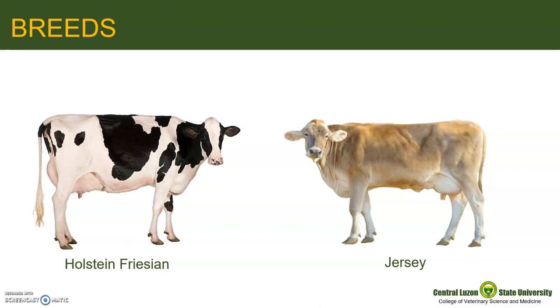Breed points are specific details of the breed's distinct standards such as color, horn formation, length and shape of ears, color of switch, and many more distinguishing features.